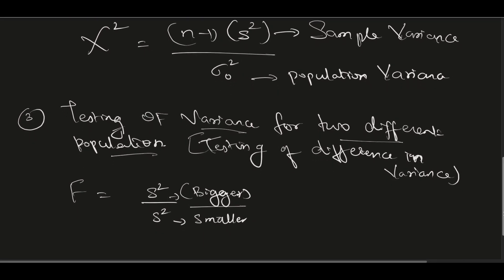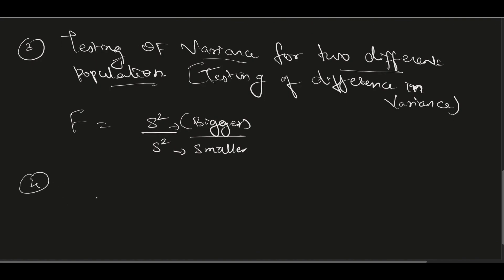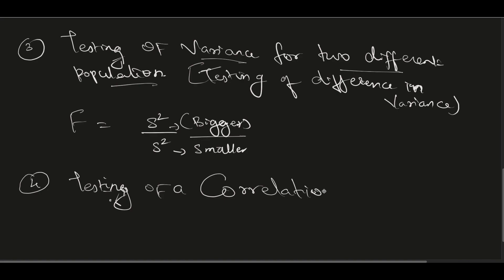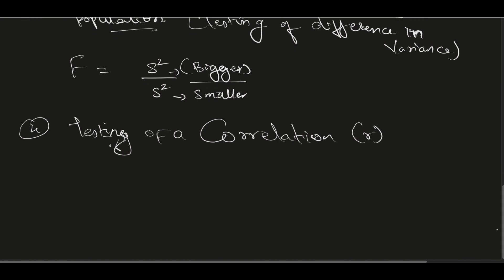Next, testing of correlation. Correlation is denoted by r. In this case, we use the t-test, and the formula is: t = r√(n-2) / √(1 - r²).